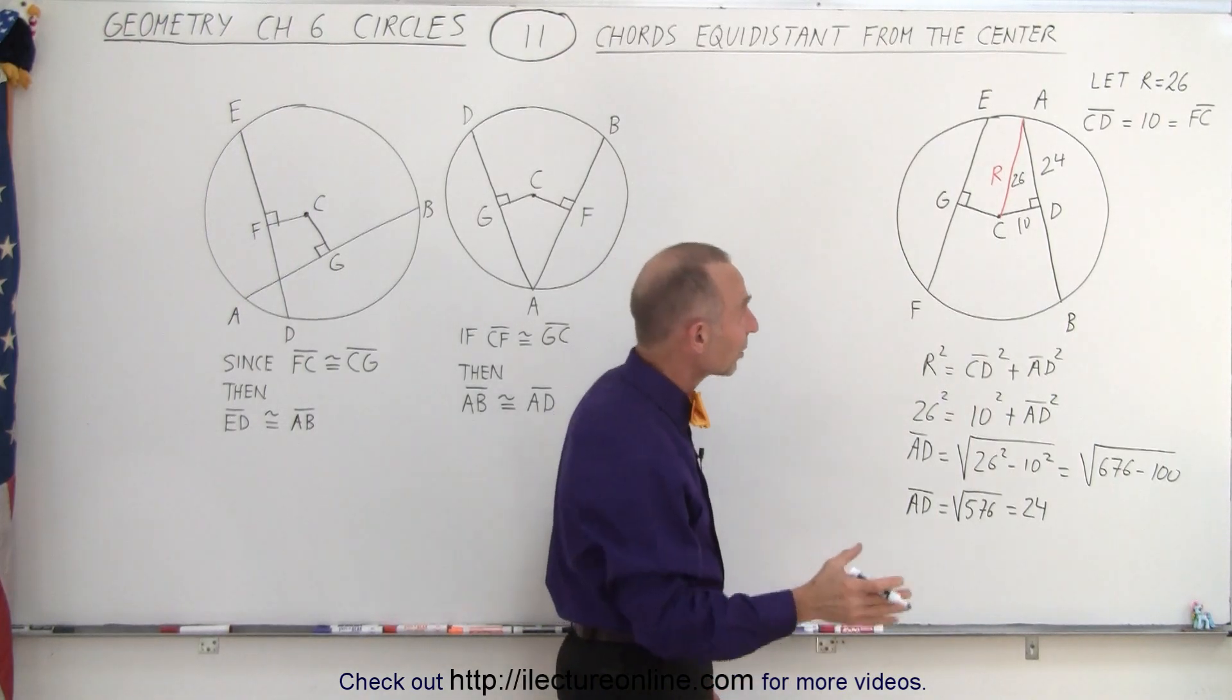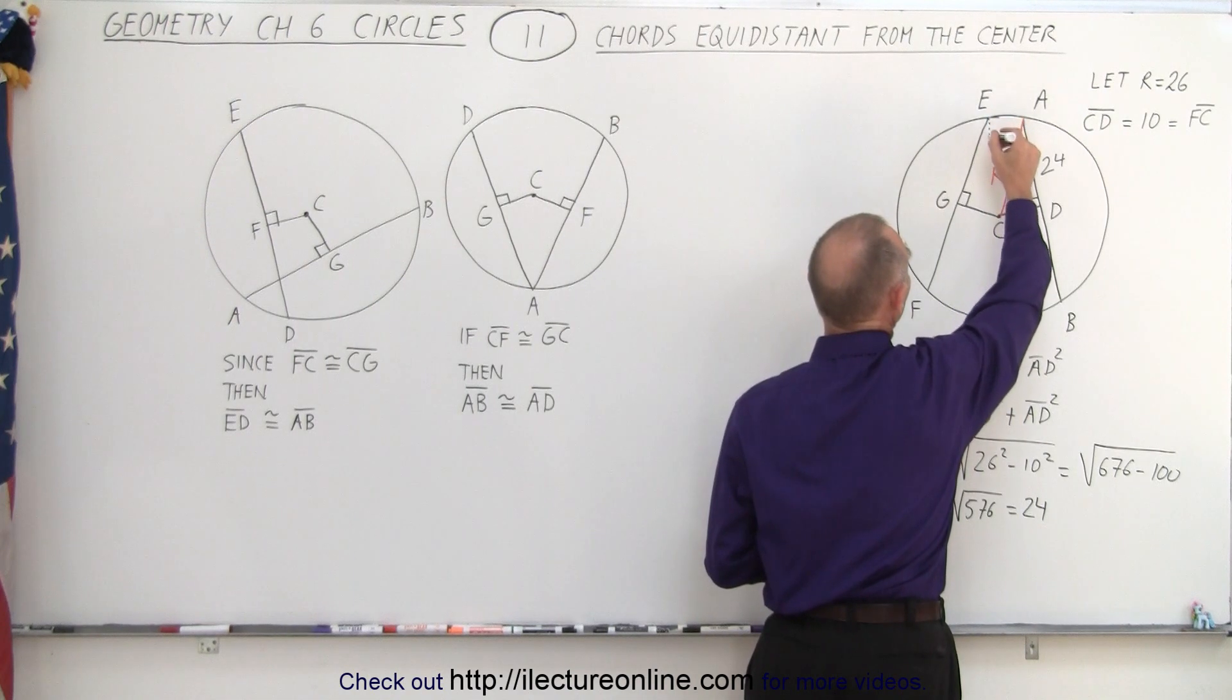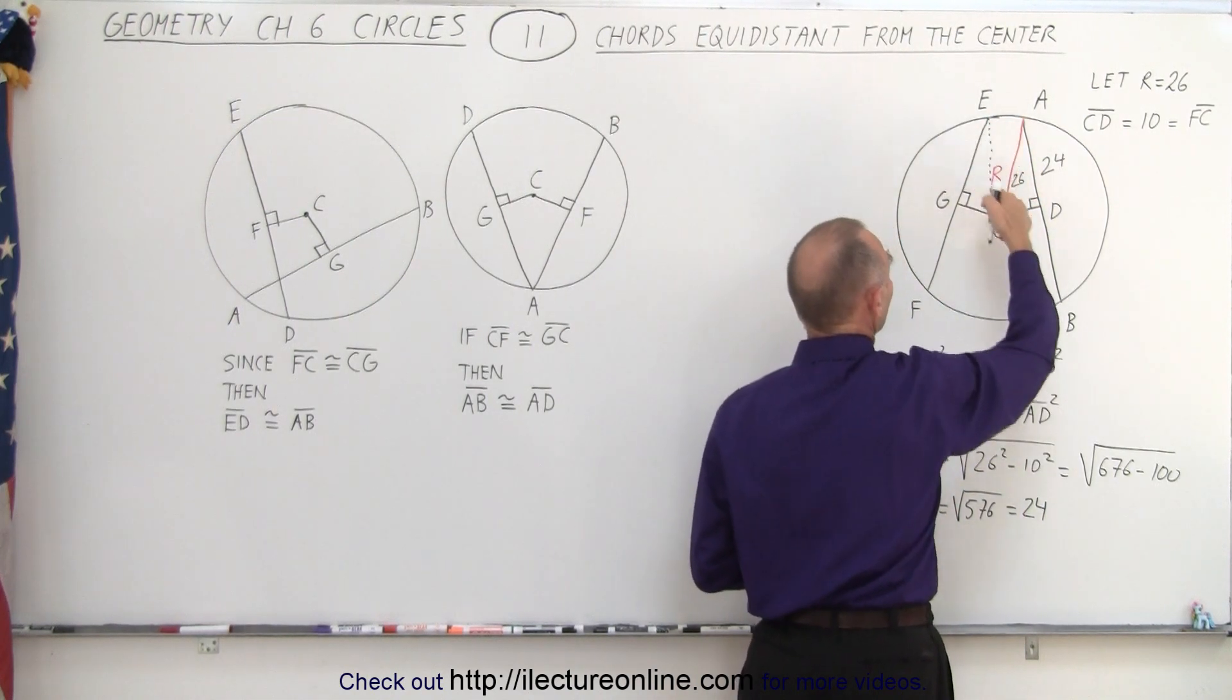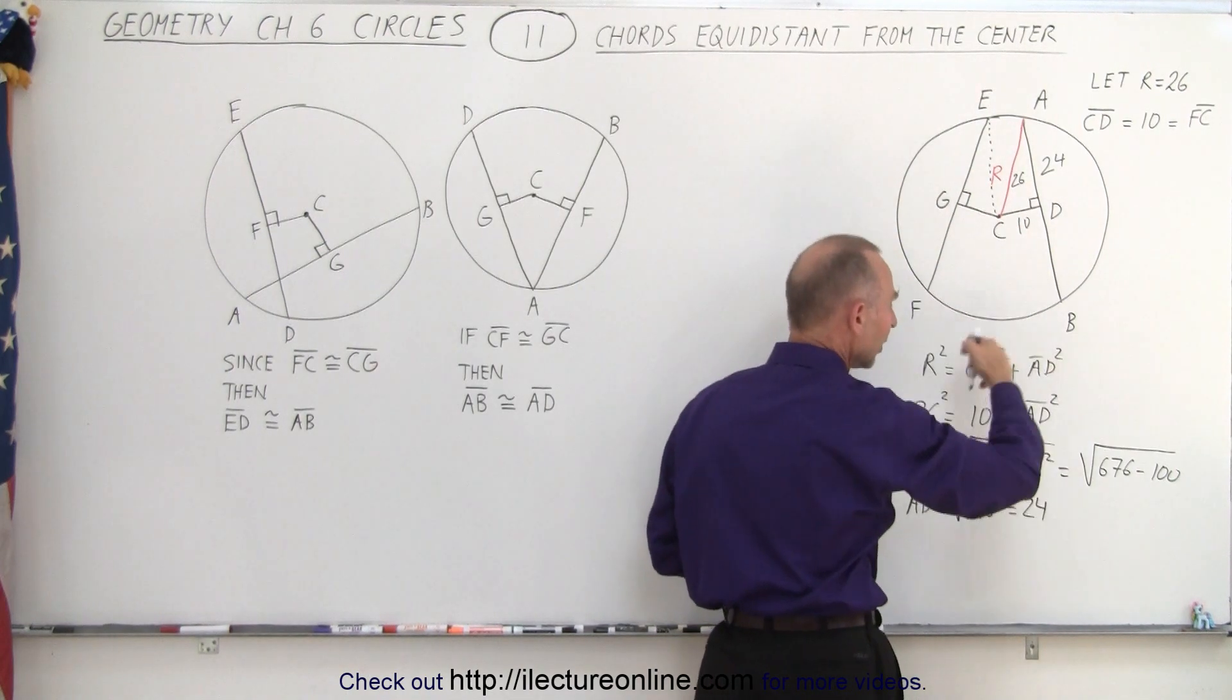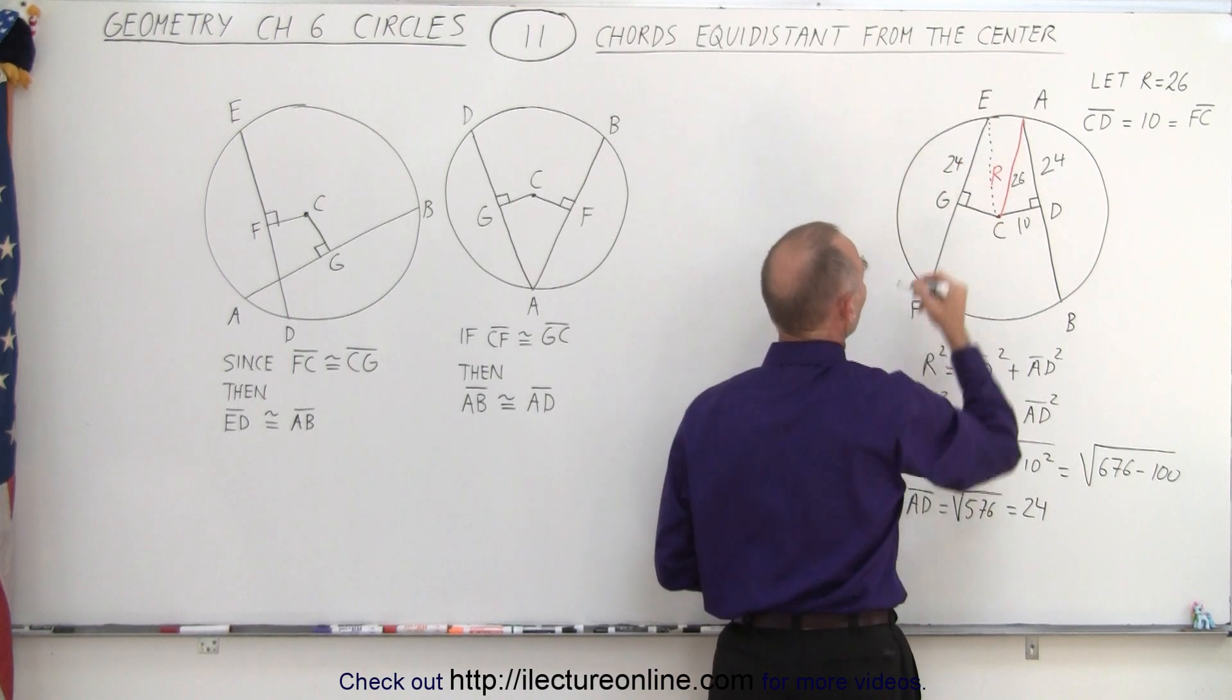Notice we can do the exact same thing on the other side. We can also draw a radius from E to C and again we know the length of the radius is 26. This is 10 so with the very same type of calculation we can show that this side must be 24 as well.